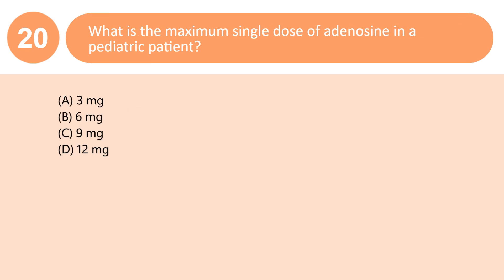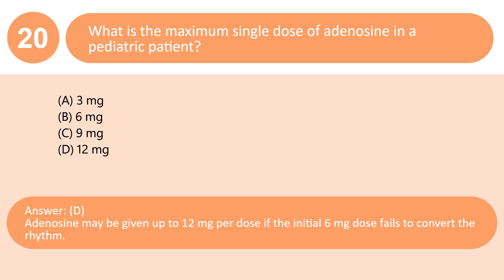What is the maximum single dose of adenosine in a pediatric patient? A. 3 mg. B. 6 mg. C. 9 mg. D. 12 mg. Answer: D. Adenosine may be given up to 12 mg per dose if the initial 6 mg dose fails to convert the rhythm.